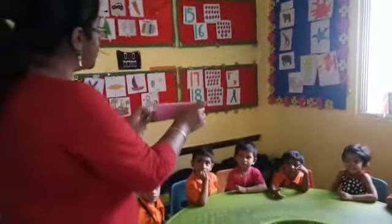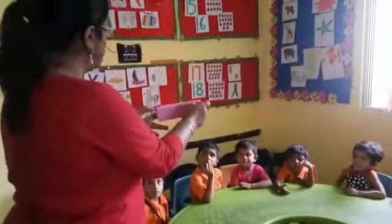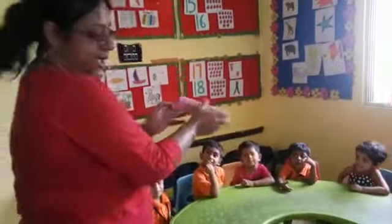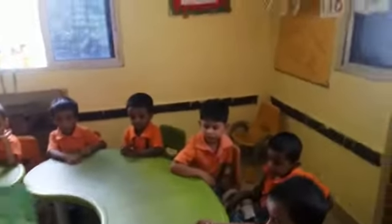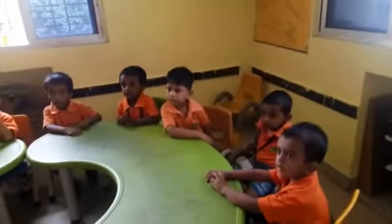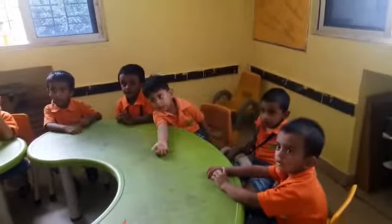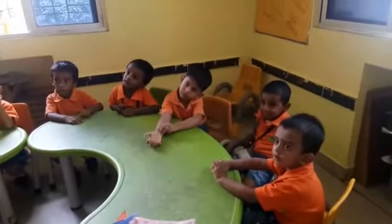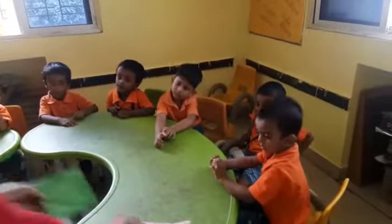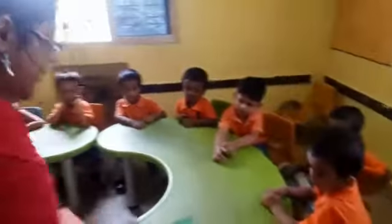Which shape is this, Ayan? Rectangle. Okay, now tell me which shape is this? Square. Square.